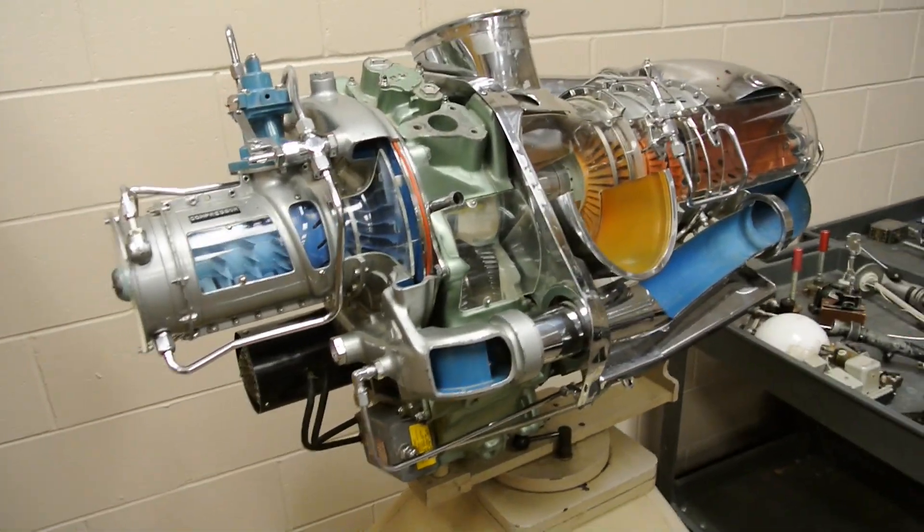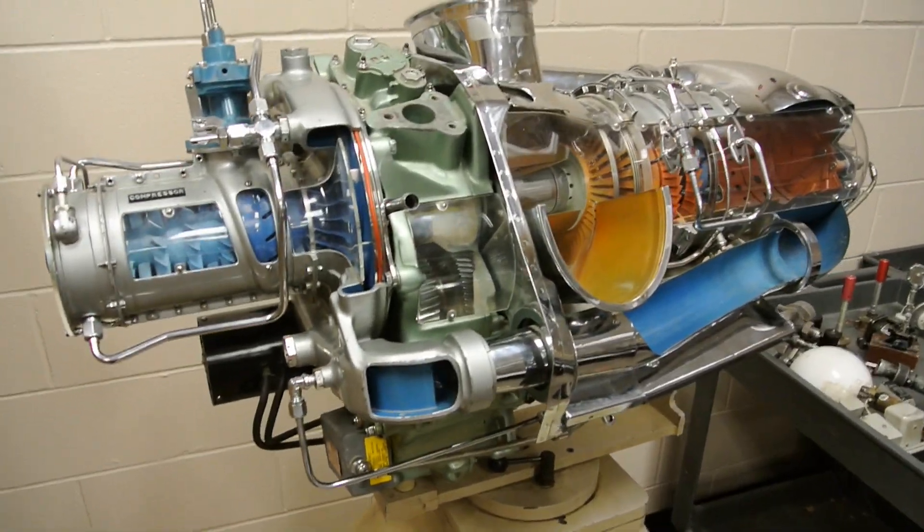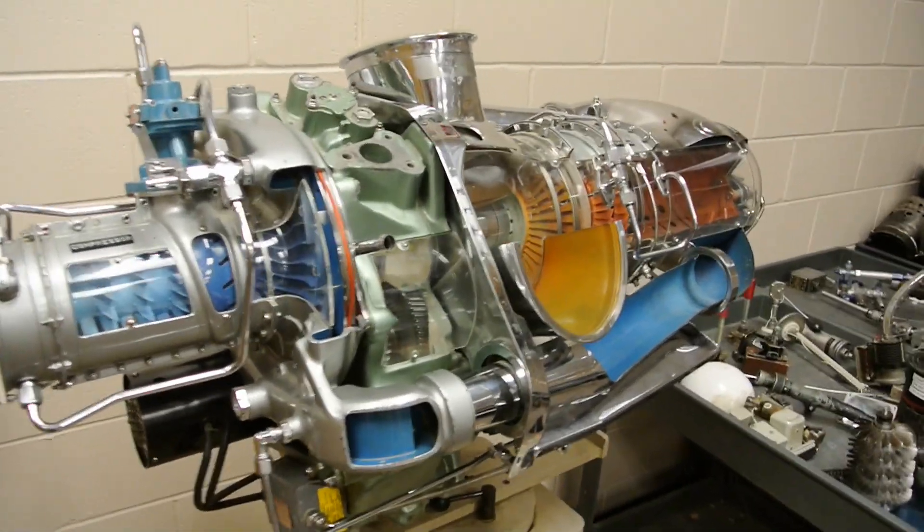This is the gas turbine engine in the Bell 206 Jet Ranger, or the TH-67, the trainer that the Army flies.